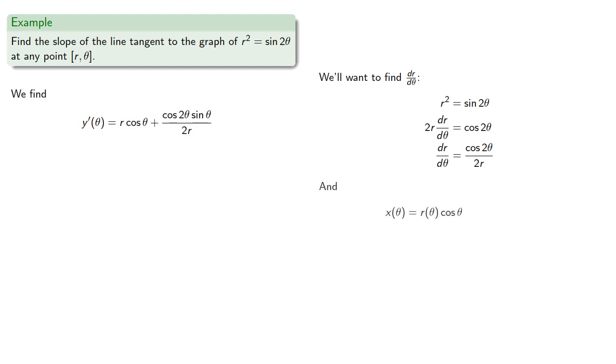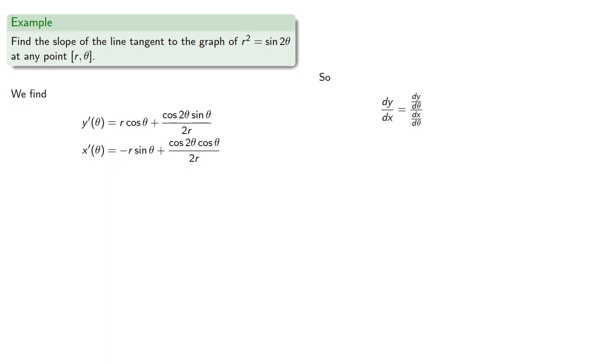Similarly, we'll assume that x of theta is r theta cosine theta, so we find the derivative will be... And we have y prime and x prime, so dy dx will be the quotient.